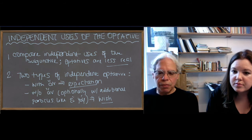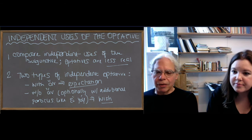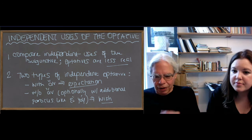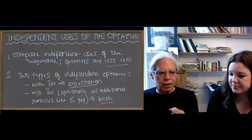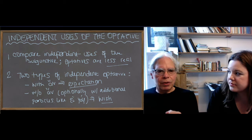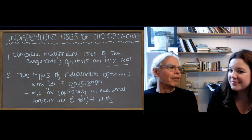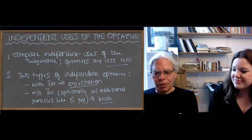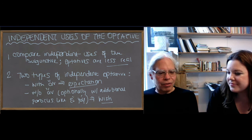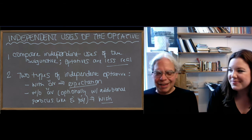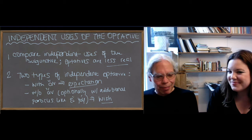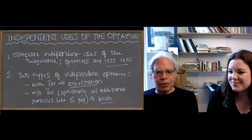We have three independent uses of the subjunctive. There's the hortatory subjunctive, which is 'let's go and do something.' In a way, it's the speaker expressing a wish that everybody do something, but it's such an intense wish that it's a command. You can't ask whether 'let's go do something' is true or false — it's not that it's true or false.